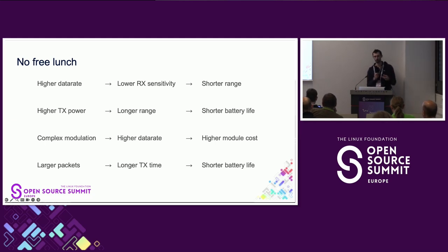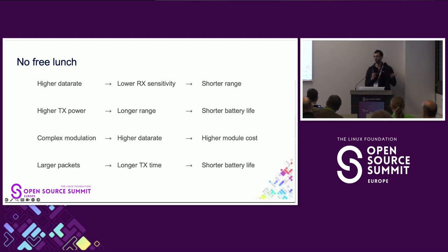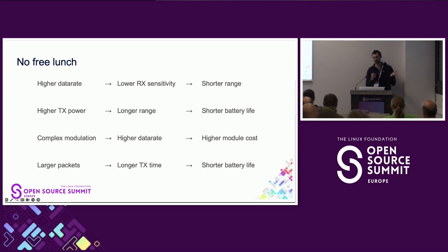Some of the more obvious trade-offs: higher data rates typically mean lower Rx sensitivity and therefore shorter range. If you want to compensate, you can increase transmit power for longer range, but that uses more energy and shortens battery life. More complex modulation schemes can send more data over the same frequency bandwidth and give higher data rates, but tend to lead to higher module costs. And larger packets, at the same data rate, just mean spending more time transmitting — which again leads to shorter battery life.